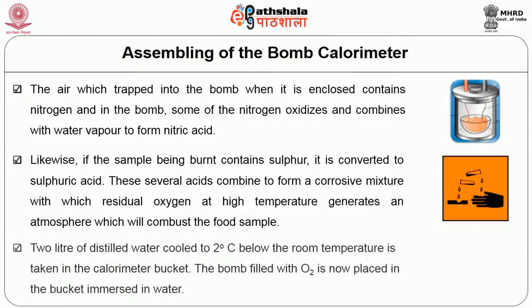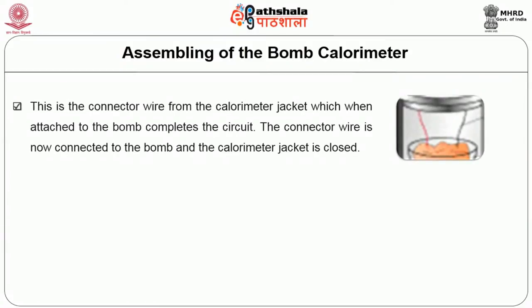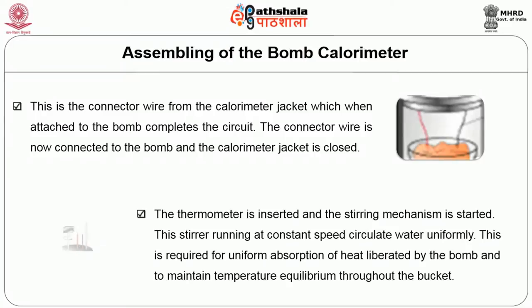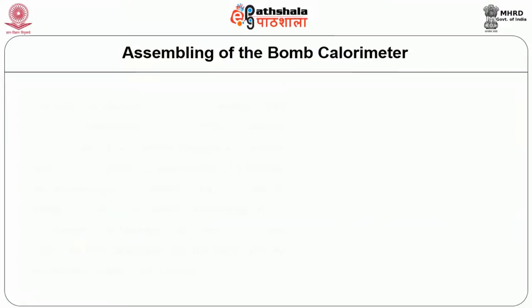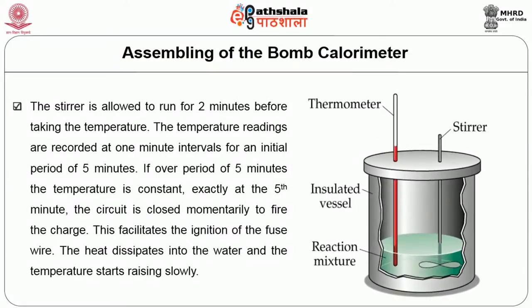2 liters of distilled water cooled to 2 degrees Celsius below room temperature is taken in the calorimeter bucket. The bomb filled with oxygen is placed in the bucket immersed in water. The connector wire from the calorimeter socket is attached to the bomb to complete the circuit, and the calorimeter socket is closed. The thermometer is inserted and the stirring mechanism is started, running at constant speed to circulate water uniformly, ensuring uniform absorption of heat and temperature equilibrium. The stirrer is allowed to run for 2 minutes before taking the temperature.